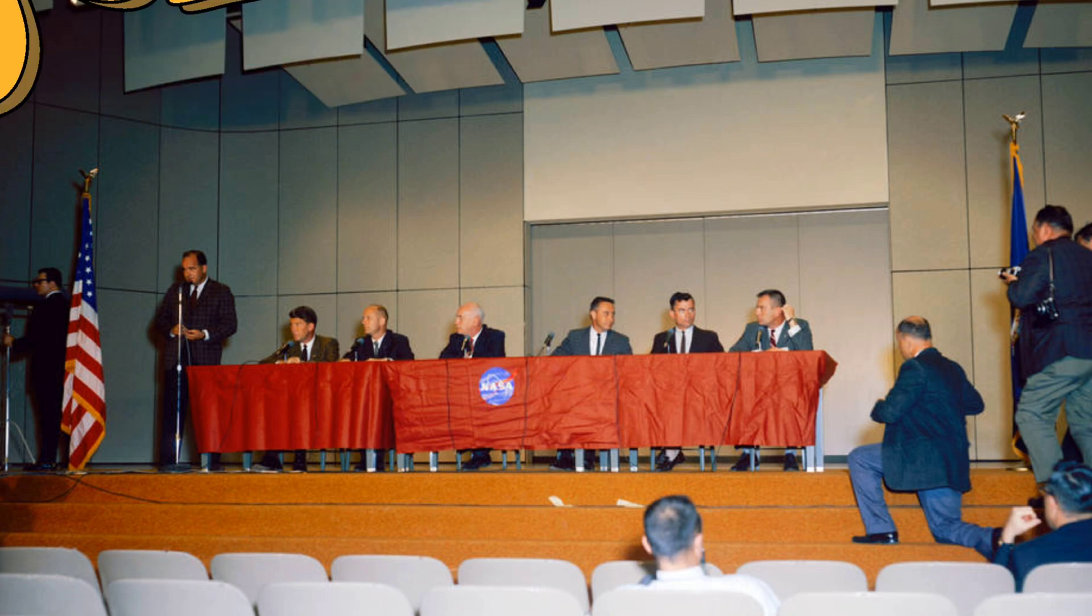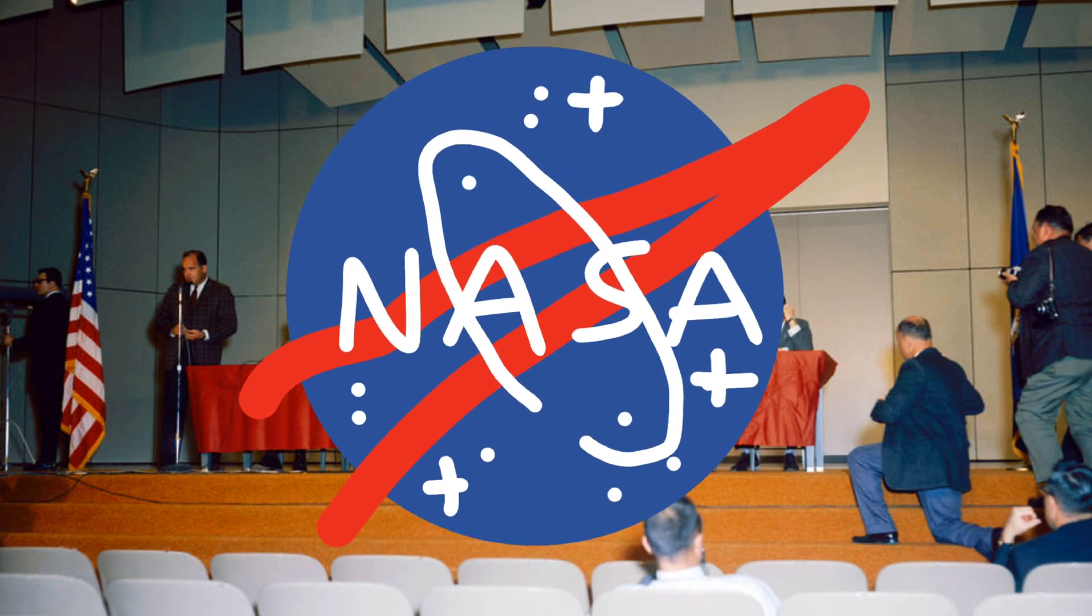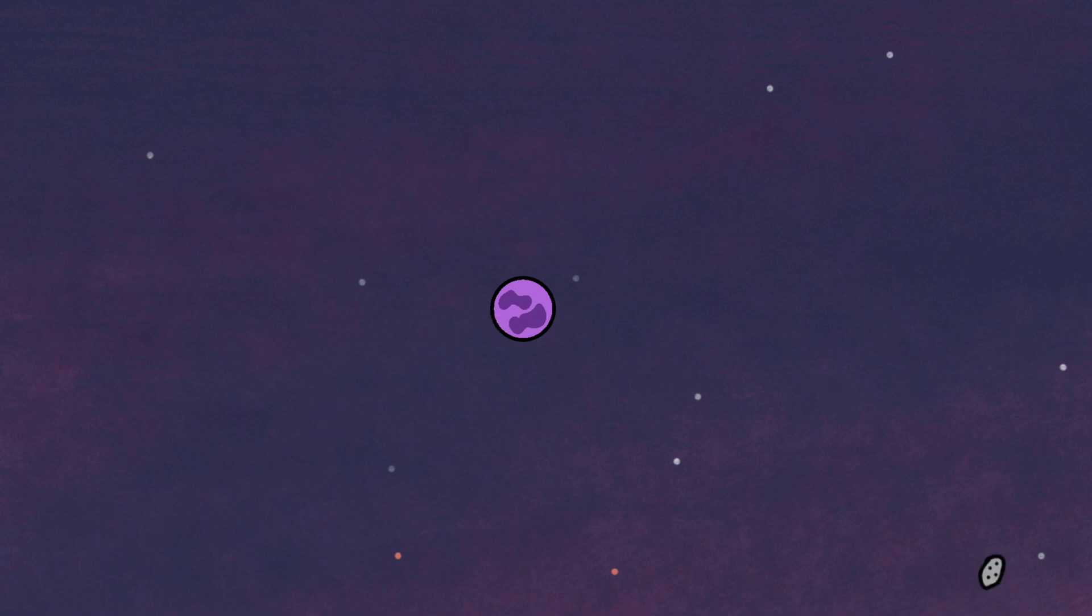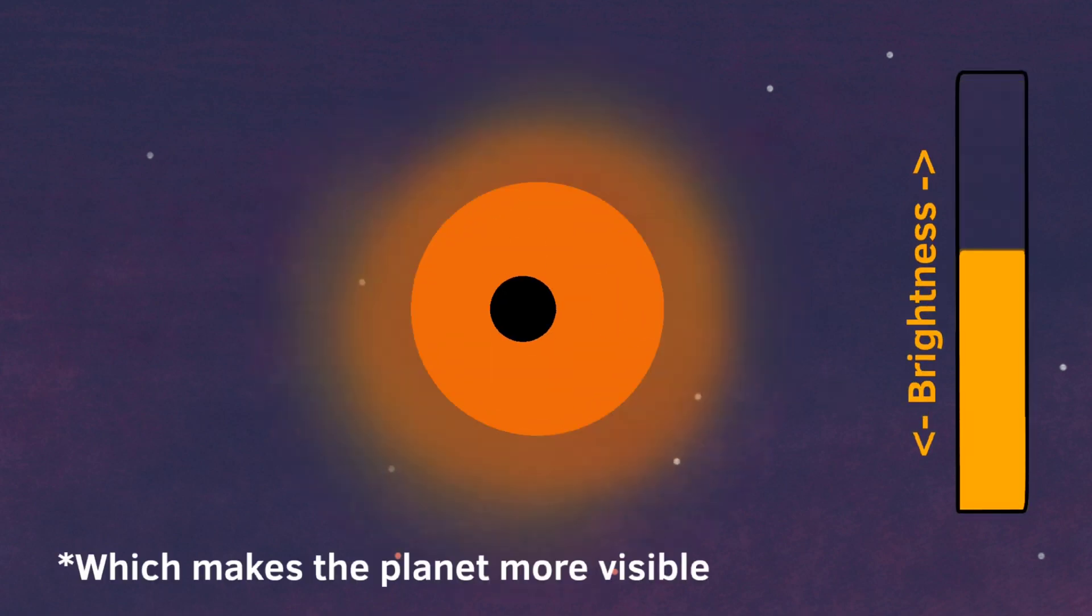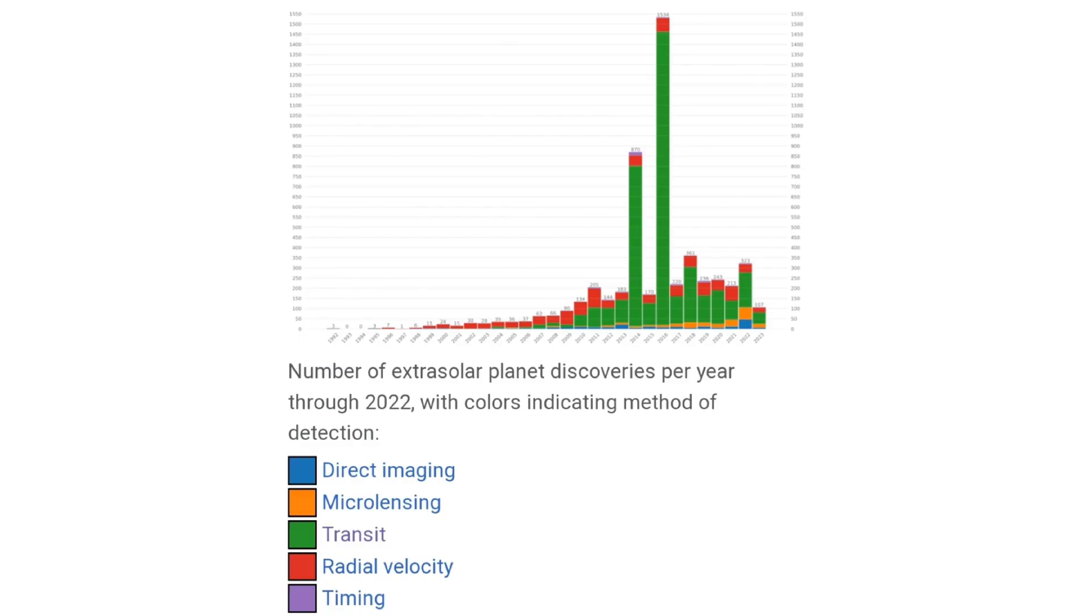Kepler-452b was announced in July 2015 by NASA using the transit method of discovery. This method is basically viewing a planet or celestial body as it passes in front of its host star, which in turn causes the emitted light from said star to dim a little bit. And while we're talking about it, the transit method is basically the most common and effective method of discovery, so that's pretty cool I think.